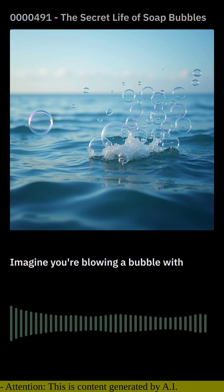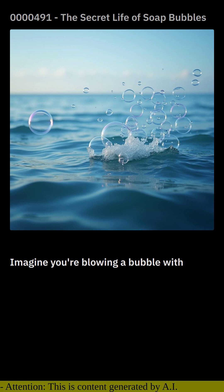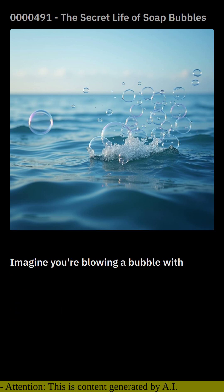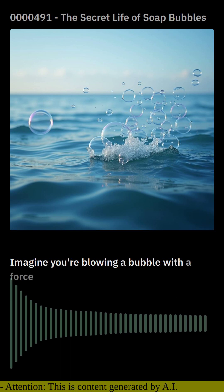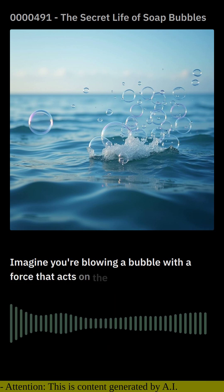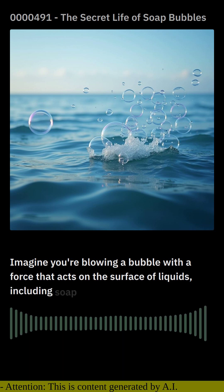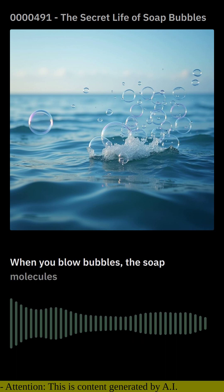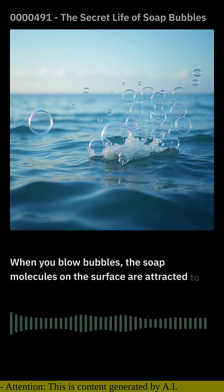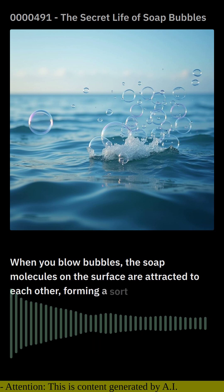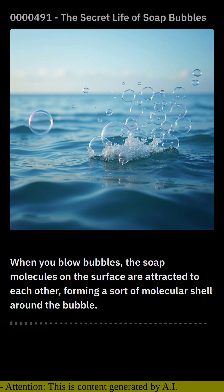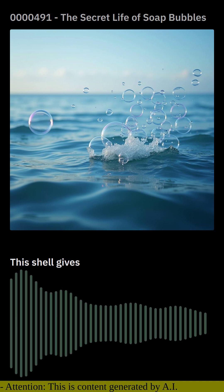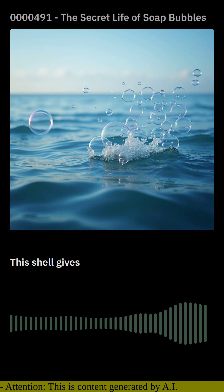But what makes it behave like an object in space? It's all about surface tension. Surface tension is like a force that acts on the surface of liquids, including soap solution. When you blow bubbles, the soap molecules on the surface are attracted to each other, forming a sort of molecular shell around the bubble. This shell gives the bubble its strength and allows it to resist external forces.